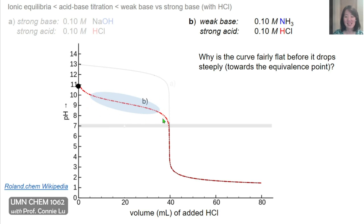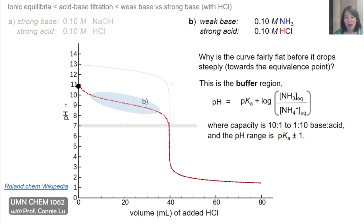The next area that's different between the strong and weak base is the region shown in blue for the weak base. This part of the curve is fairly flat as we approach the equivalence point. It's the part where we would have added enough hydronium ions to form ammonium ion from the NH3 present in solution, yet because we're still not at the equivalence point, we still have the weak base ammonia left over in appreciable amounts. This is the buffer region, because both the weak base and its conjugate acid are present in appreciable amounts. We use the Henderson-Hasselbalch equation to solve for the pH of that buffer. Buffers have a fairly wide range where the base-to-acid ratio can be anywhere from 10:1 to 1:10, corresponding to a pH range of pKa minus 1 to pKa plus 1.